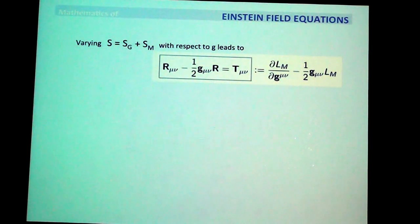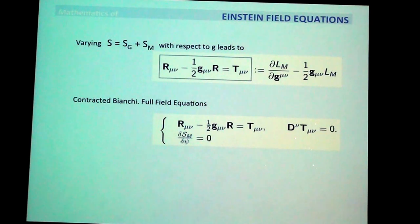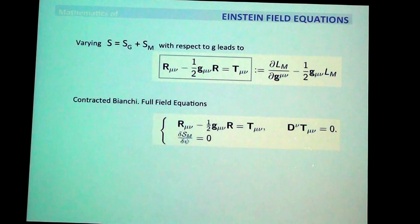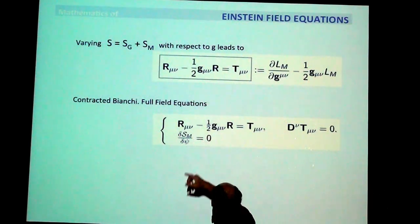On the right-hand side you have the energy-momentum tensor of matter, defined purely in terms of the matter Lagrangian. Now let's talk about completing the Einstein equations — it's not quite correct to just call these the Einstein equations because in reality you need a little bit more.